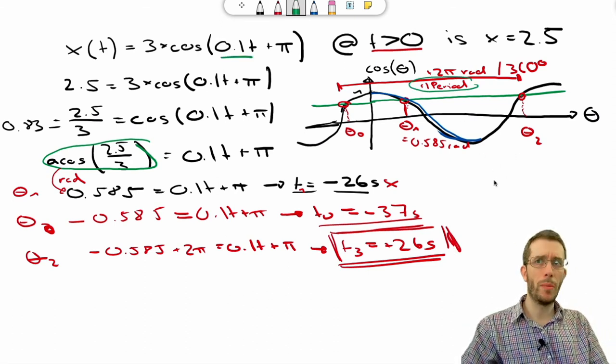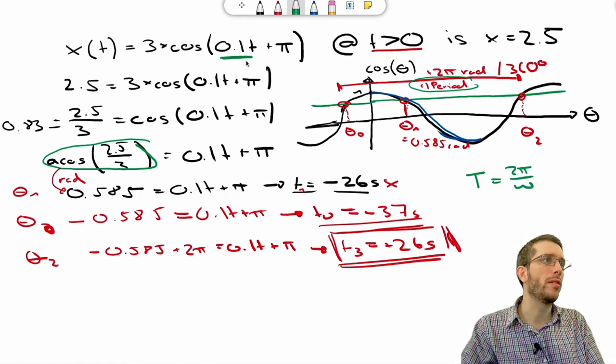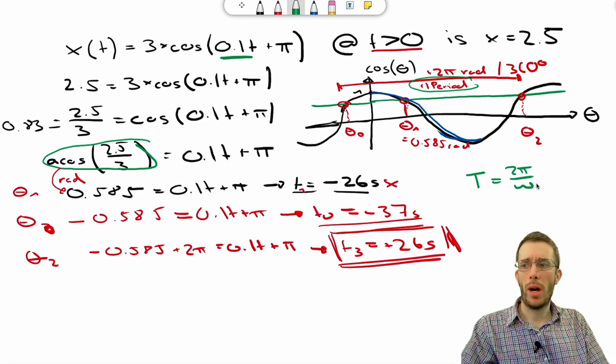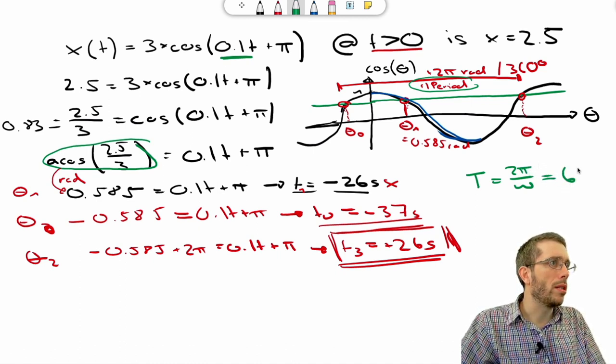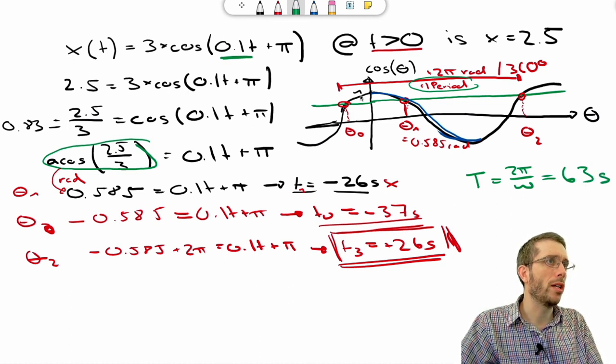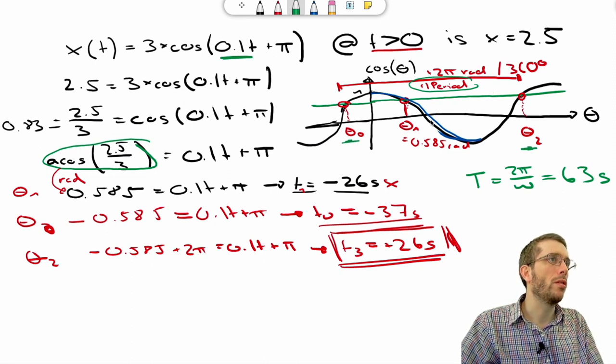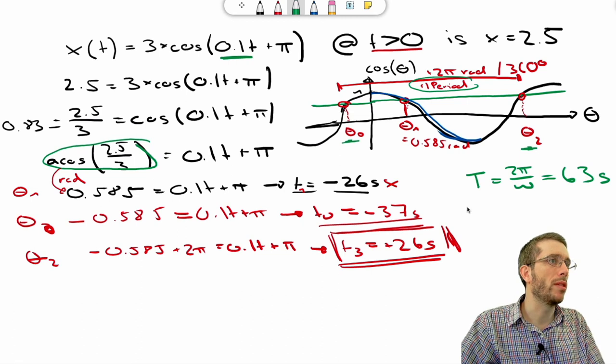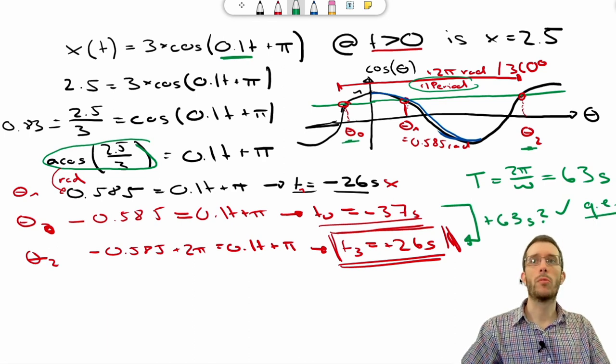So before I mentioned something about the period. If this is simple harmonic motion, then we can calculate the period as being 2 pi over my angular frequency, which is the 0.1, so 2 times 3.14 divided by 0.1, that gives me about 63 seconds. Now I could check, according to my sketch here, my result that I got from my second angle would be my 0th angle, the one before, plus 2 pi, or the one period, would be the 63 seconds. So is this plus 63 seconds? And it is. So what was to be shown? Quod erat demonstrandum.